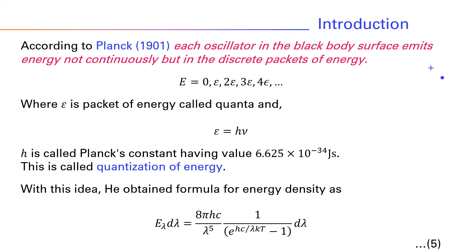It is observed that for small wavelengths, Planck's law reduces to Wien's formula, and for longer wavelengths, it reduces to Rayleigh and Jeans' formula.